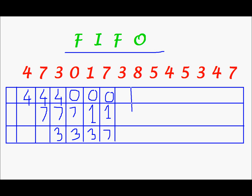Next, I have to get in 3. And to bring in 3, I shall have to remove 0, because 0 was the first to enter. In place of 0, I shall write 3. 1 will be there, and in place of 7, 7 will be there.